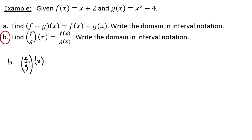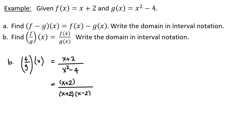For part B, f divided by g of x equals x plus 2 all over x squared minus 4. Factoring the denominator gives x plus 2 all divided by (x plus 2)(x minus 2). Notice x cannot equal negative 2 and x cannot equal positive 2, otherwise we'd get division by zero. The x plus 2 terms form a factor of 1, so f divided by g of x simplifies to 1 divided by x minus 2.